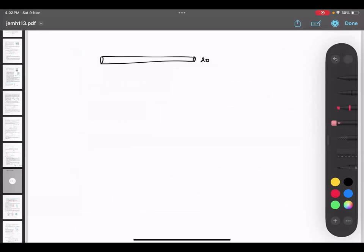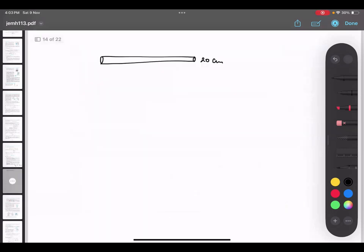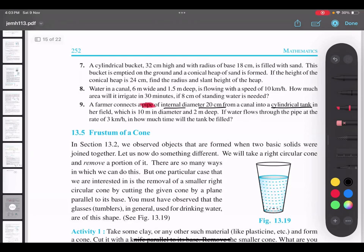So over here it is 20 centimeter from a canal into a cylindrical tank. So this is also flowing and there is a tank like this. Which is 10 meter diameter, 2 meter deep.